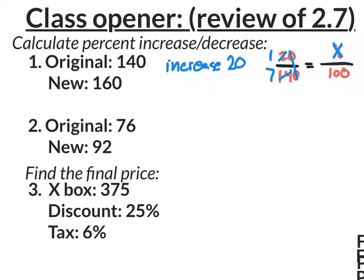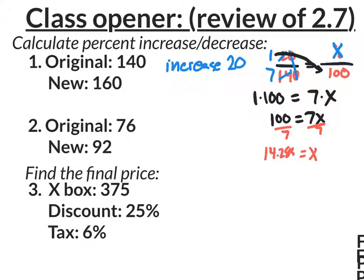So now you could simply cross multiply 1 times 100 equals 7 times X. Right? So you really have the equation 100 equals 7X. And to solve that equation, you're going to have to divide by 7. Use a calculator. 100 divided by 7 is X equaling 14.285.